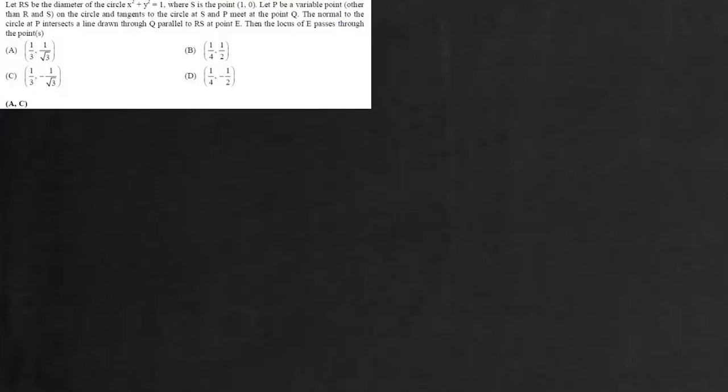So we have this circle with center at origin. Now this point S is (1,0). Then basically this point R is (-1,0).